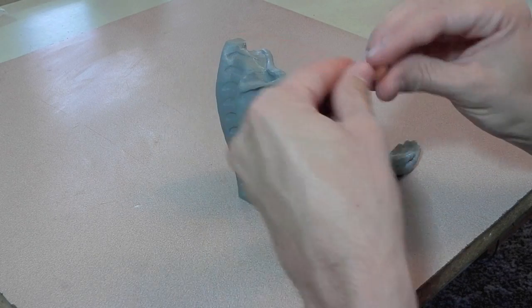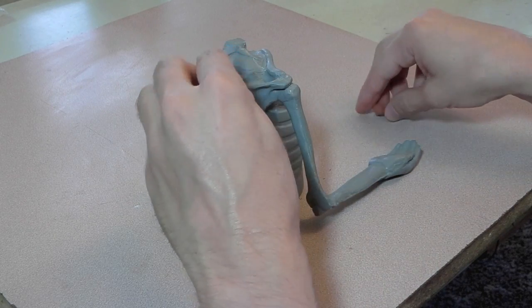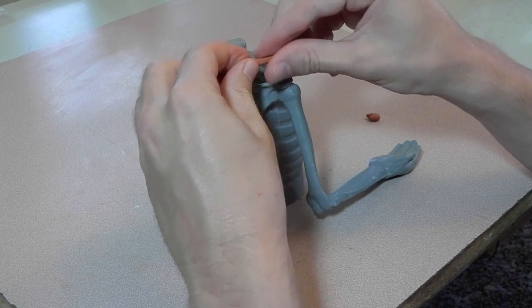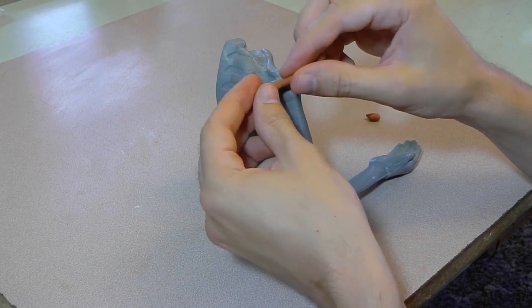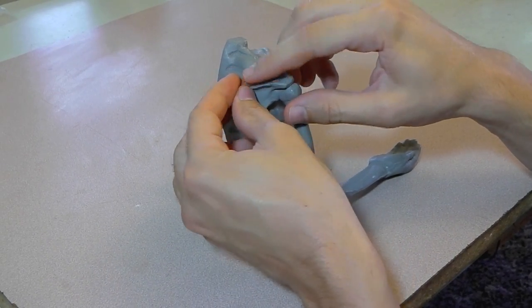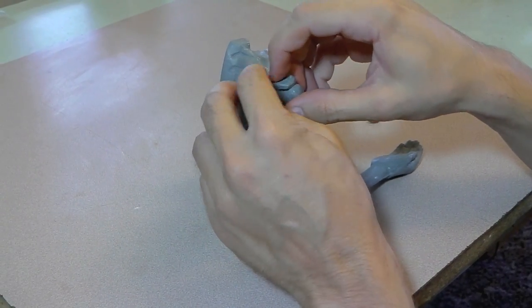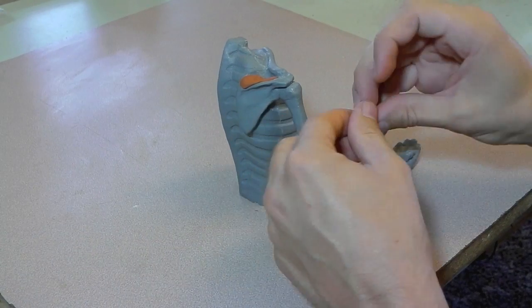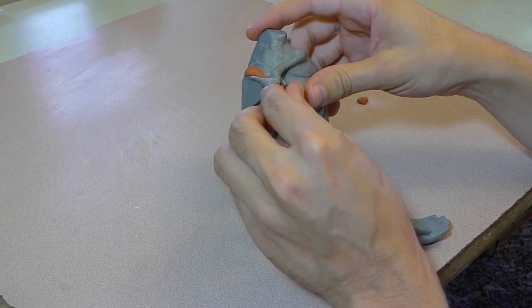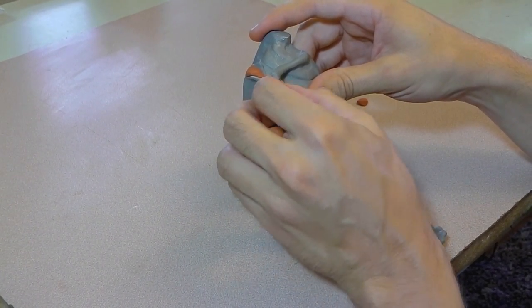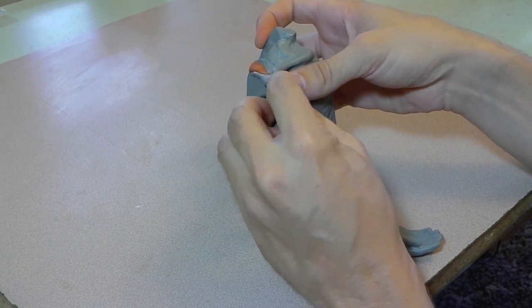So here I am adding the supraspinatus to the plastic model. First I'm putting it above the spine in the fossa, and then I'll put another part on the humerus. I'm doing it in two parts just because my plastic model doesn't have a hole through underneath the acromion process.